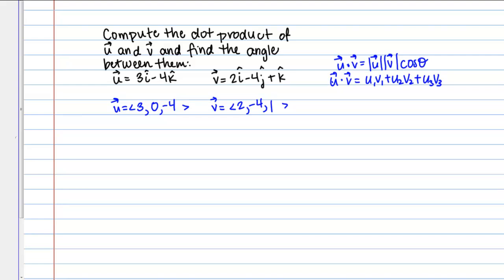Now since what we're ultimately looking for is the angle between the vectors, so what we're looking for is theta, we probably don't want to use this first definition that includes cosine theta. Because we don't know theta, that's what we want to find. So what we want to use to compute the dot product is actually this second definition here. And then once we have that we'll be able to actually find theta.